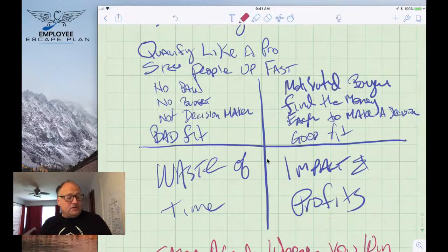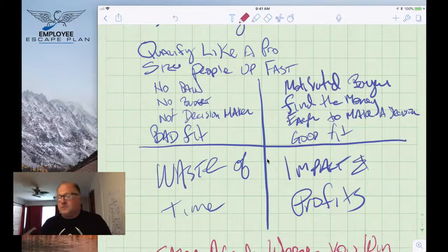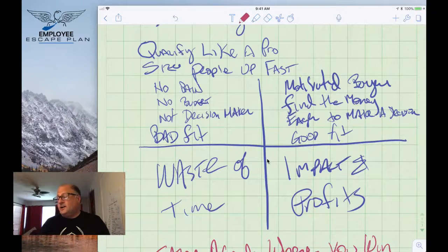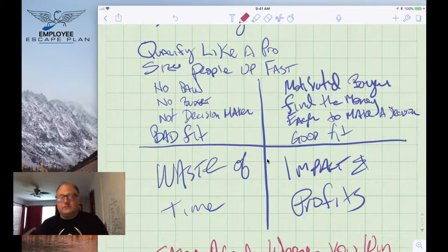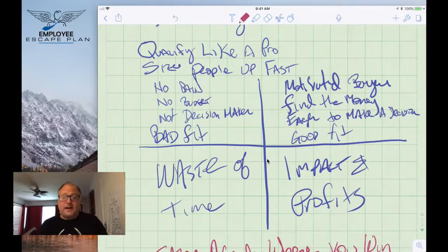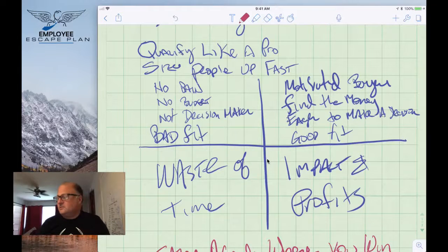So if you do nail this right though, and you do become really good at qualifying people, you end up attracting motivated buyers. You filter out everyone else. These are people that will find the money and they're eager to make a decision. When you're dealing with somebody that's highly qualified, you make a big impact and you make money.